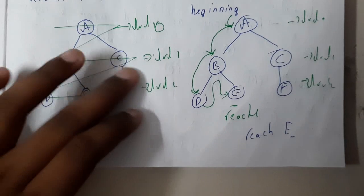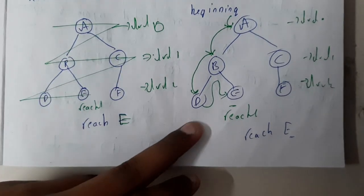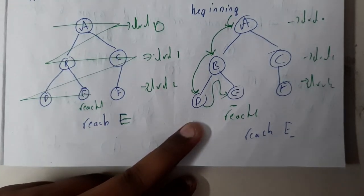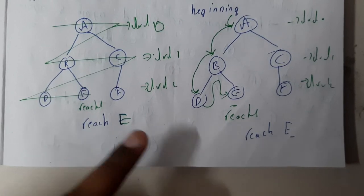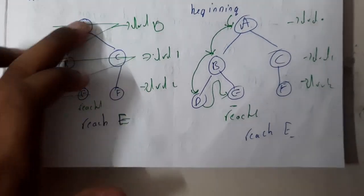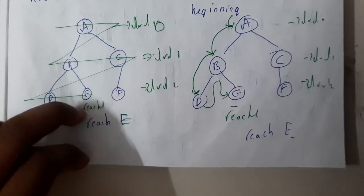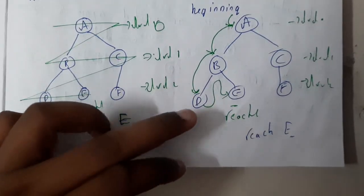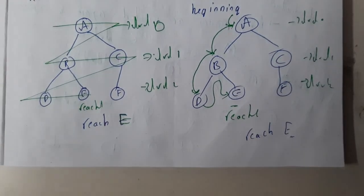So if you observe, BFS works level by level and DFS works depth by depth. From this we can see that BFS reached the 5th state in 5 steps, while DFS reached the 4th state in 4 steps. So which is better? DFS is better.